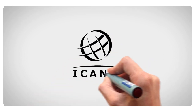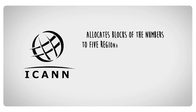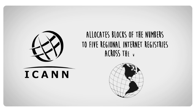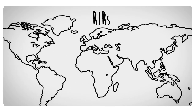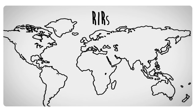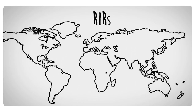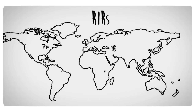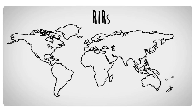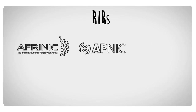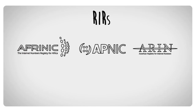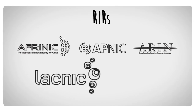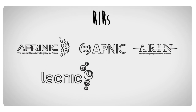ICANN allocates blocks of the numbers to five regional Internet registries across the world. The RIRs are non-profit organizations that administer, distribute, and register IP addresses and autonomous system numbers within their region: AFRINIC for Africa, APNIC for Asia-Pacific, ARIN for North America and parts of the Caribbean, and LACNIC for Latin America and parts of the Caribbean.